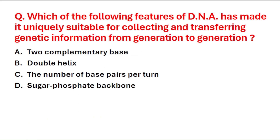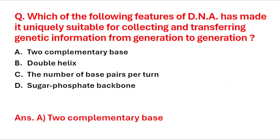Next question: which of the following features of DNA has made it uniquely suitable for collecting and transferring genetic information from generation to generation? A: two complementary bases, B: double helix, C: number of base pairs per turn, D: sugar-phosphate backbone. The right answer is option A, two complementary bases.